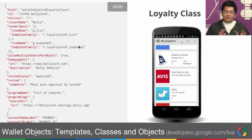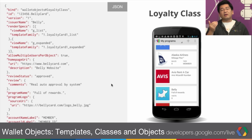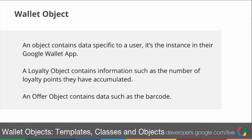On the right, we see what the list view templates look like when you have a few objects saved within a loyalty account or within a Wallet Objects account. Wallet Objects contain information specific to each individual user. For loyalty, it could be information such as the member ID, the member name, their barcodes, or some personal messages.